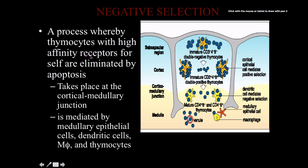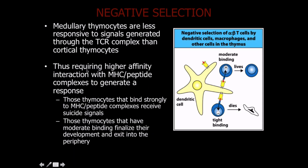Negative selection is the process whereby thymocytes with high-affinity receptors for self are eliminated by apoptosis. This takes place at the corticomedullary junction and is mediated primarily by dendritic cells and macrophages, and to a lesser extent by medullary epithelial cells. Medullary thymocytes are far less responsive to signals from the T cell receptor complex than cortical thymocytes, requiring a higher affinity interaction with MHC-peptide complexes to generate a response. Those thymocytes that bind strongly to MHC complexes receive suicide signals and kill themselves, while thymocytes with moderate binding finalize development and exit into the periphery.